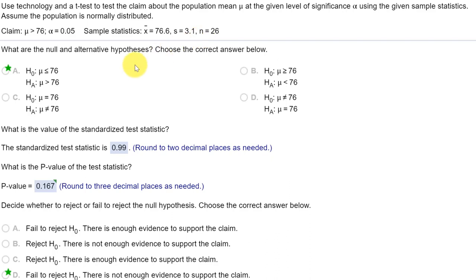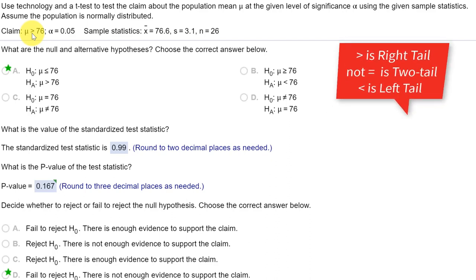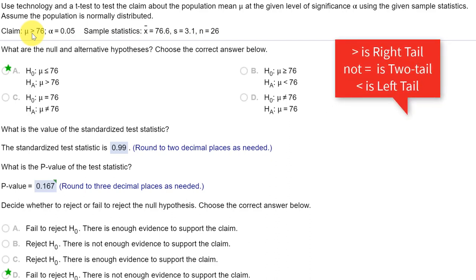The first thing we have to do is come up with a null and alternative, and that's important. Here, we're given the claim is the mean is greater than 76 because that is an inequality. Greater than is an inequality. That makes the claim the alternative, and the null has to be the complement, the opposite, which would be less than or equals 76.